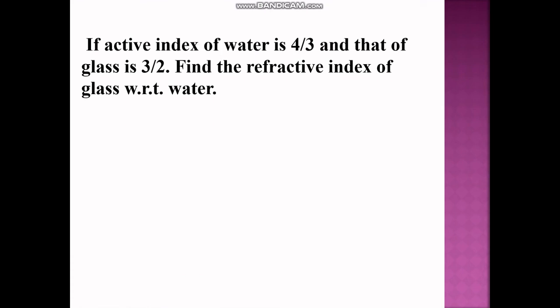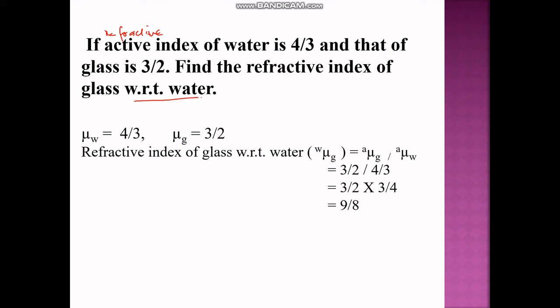Now the next numerical — there is a slight misprint here. The refractive index of water is 4/3 and that of glass is 3/2. Find the refractive index of glass with respect to water. The refractive index of water is given as 4/3 and glass is 3/2.